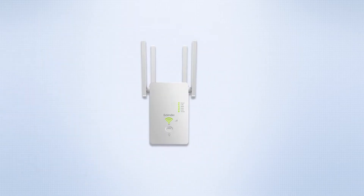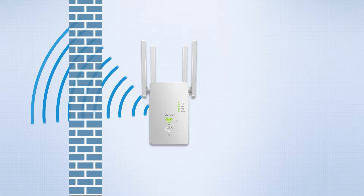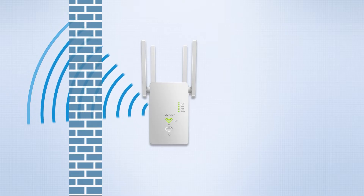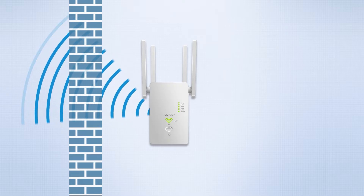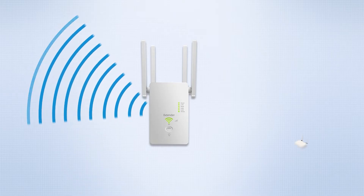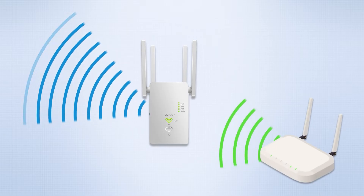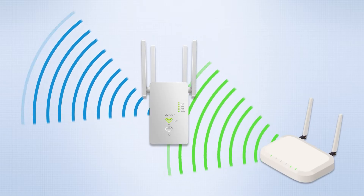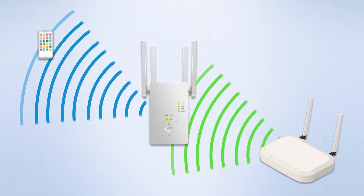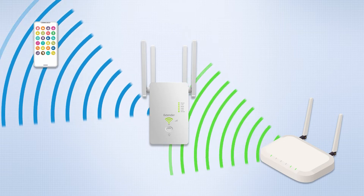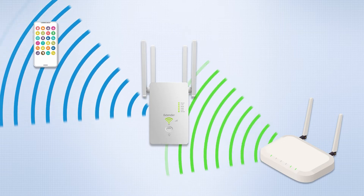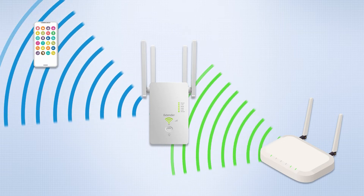Wi-Fi extenders aim to extend coverage and improve signal strength, enhancing the ability to penetrate walls. They receive the wireless signal from the main router, amplify it, and then extend it so that you can access the internet even in dead spots where you previously couldn't connect.